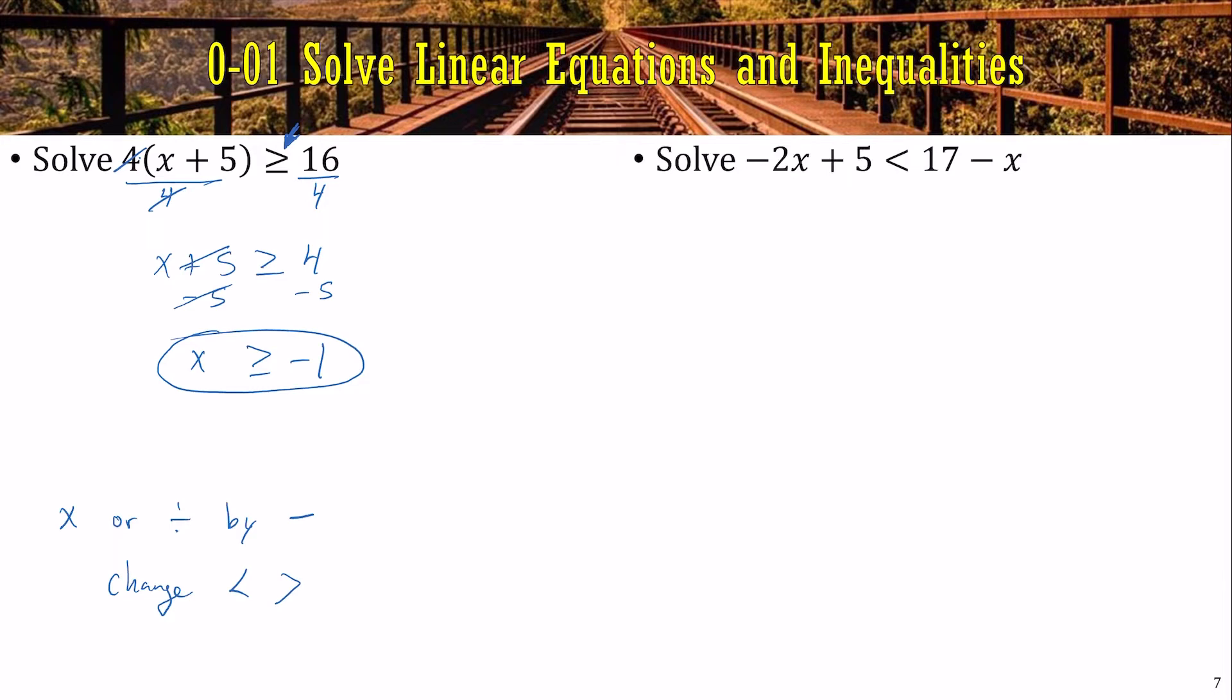Let's try another one. Let's solve this one. Oh, this one has x's on both sides. So let's get the x's on the same side. So maybe I'll add x to both sides. That would be negative x plus 5 is less than 17. The furthest thing from the x is the 5, so I'll subtract the 5. So negative x is less than 12.